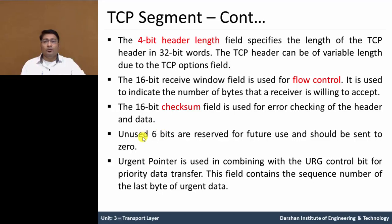The unused 6 bits are reserved for future use and should be sent as zero. The urgent pointer is used in combination with the urgent control bit for the priority of data transfer. This field contains the sequence number of the last byte of urgent data.